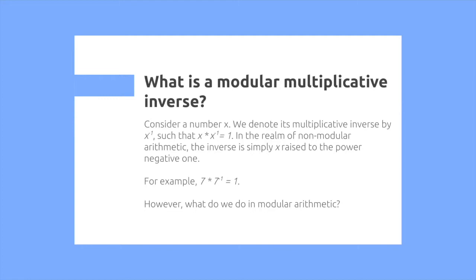Consider a number x. We denote its multiplicative inverse by x to the power of negative 1, such that x times x to the power of negative 1 is equal to 1. In the realm of non-modular arithmetic, the inverse is simply x raised to the power of negative 1.